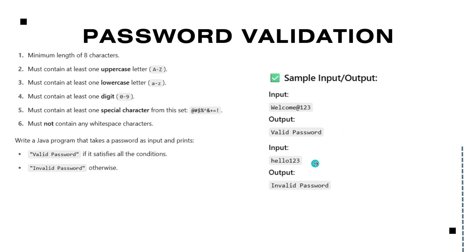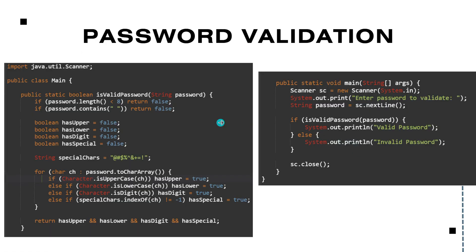Whereas 'hello123', though its length has eight characters, it doesn't have any special character — so it is an invalid password. I have run this code and provided it to you. If you are good with Python or C++, you can execute it in that language. I am good with Java, so I am explaining with Java.